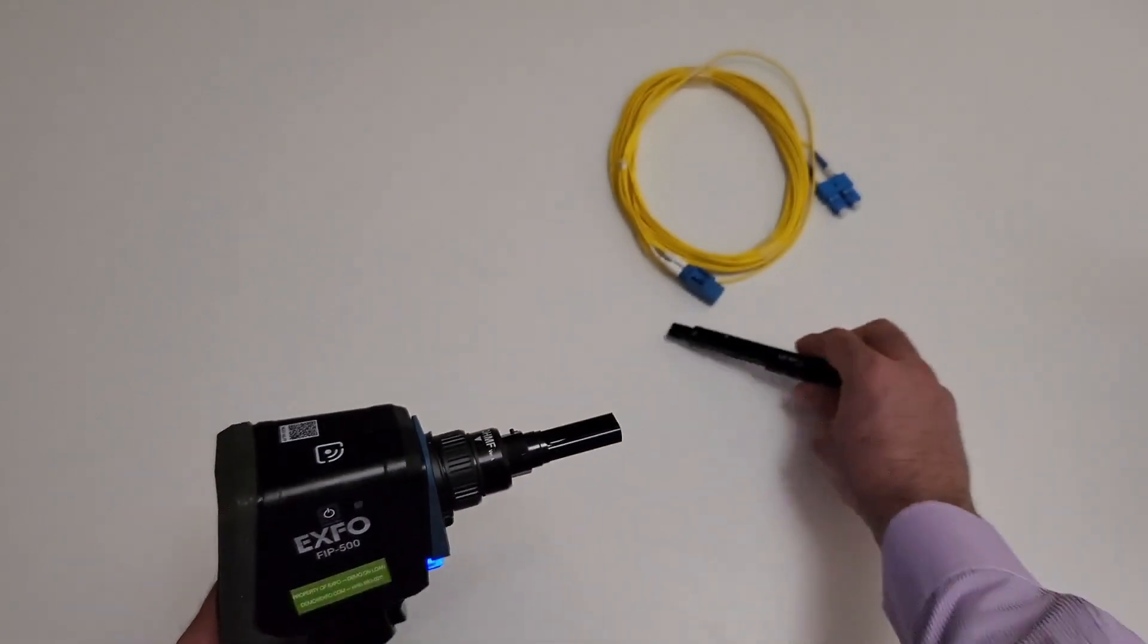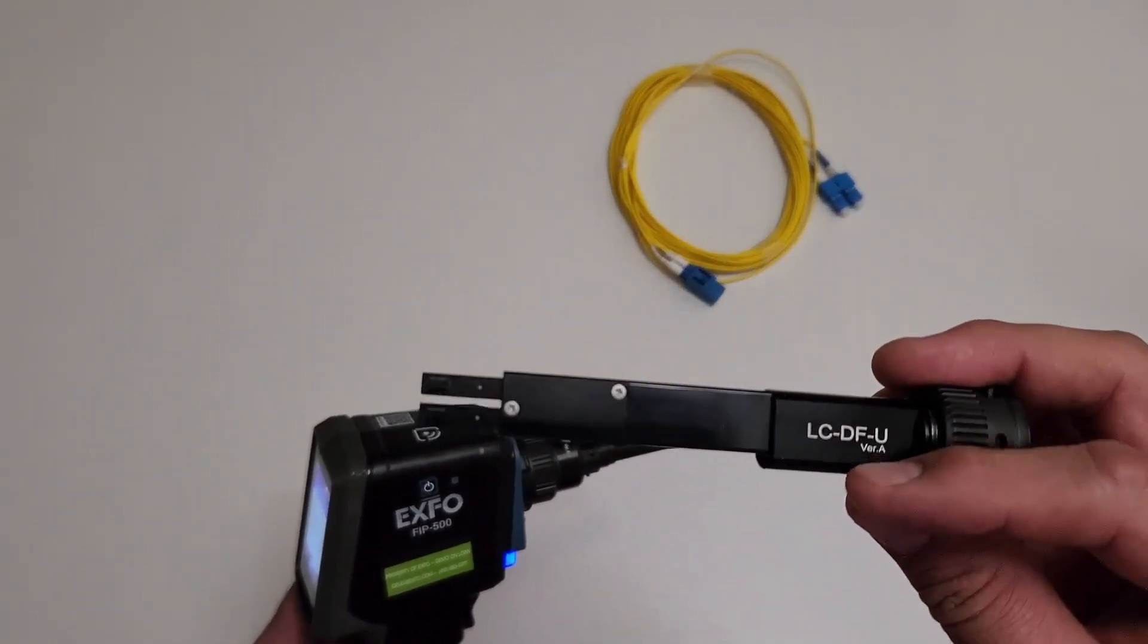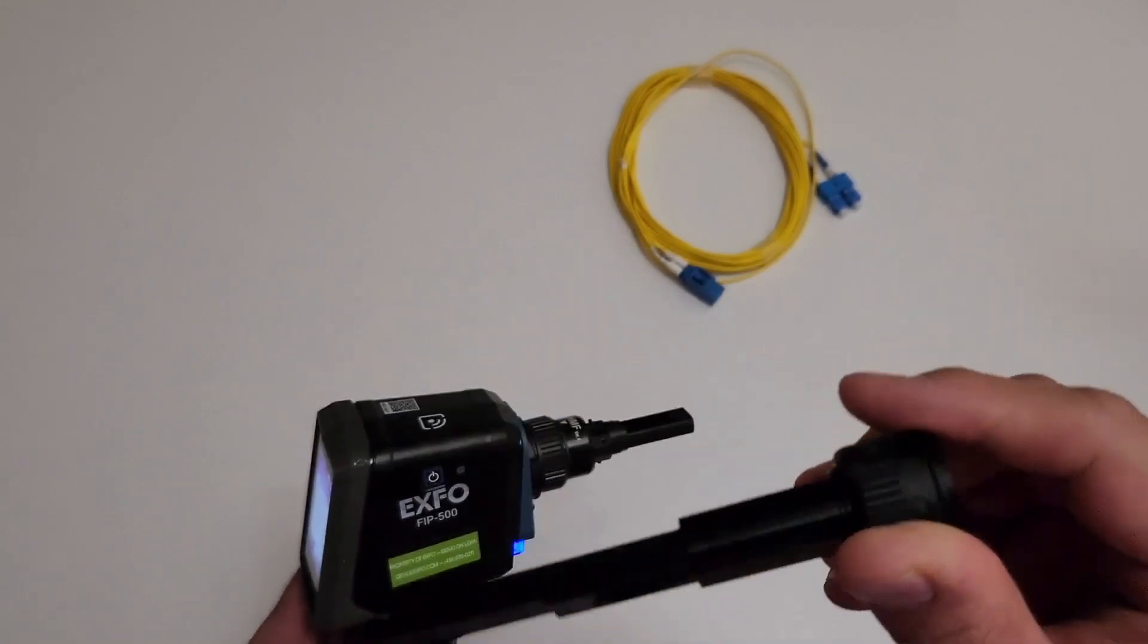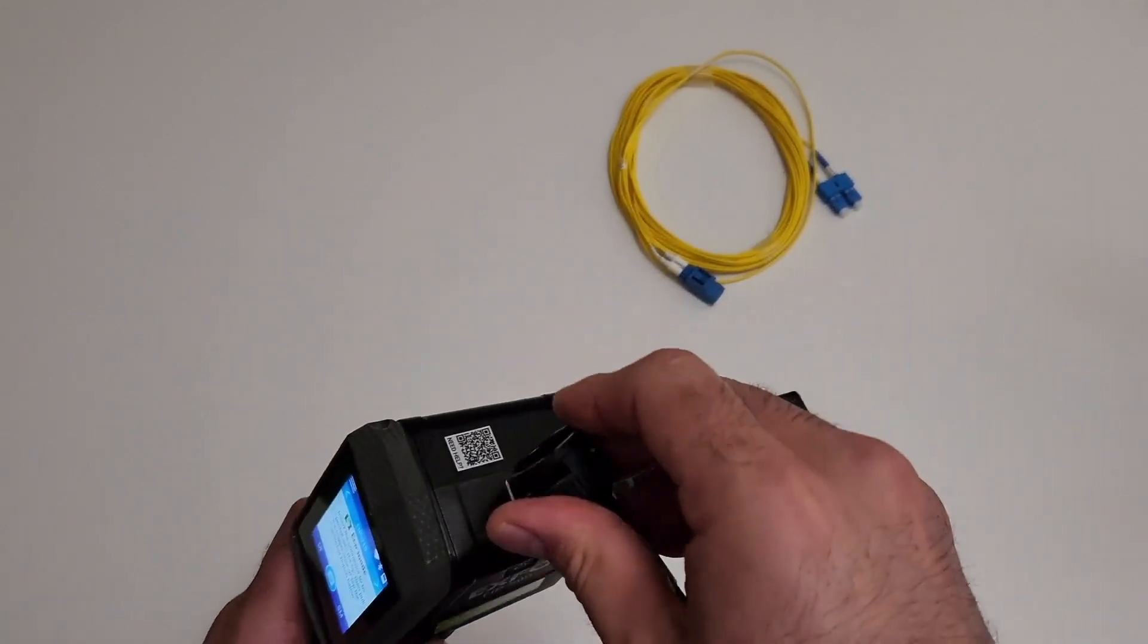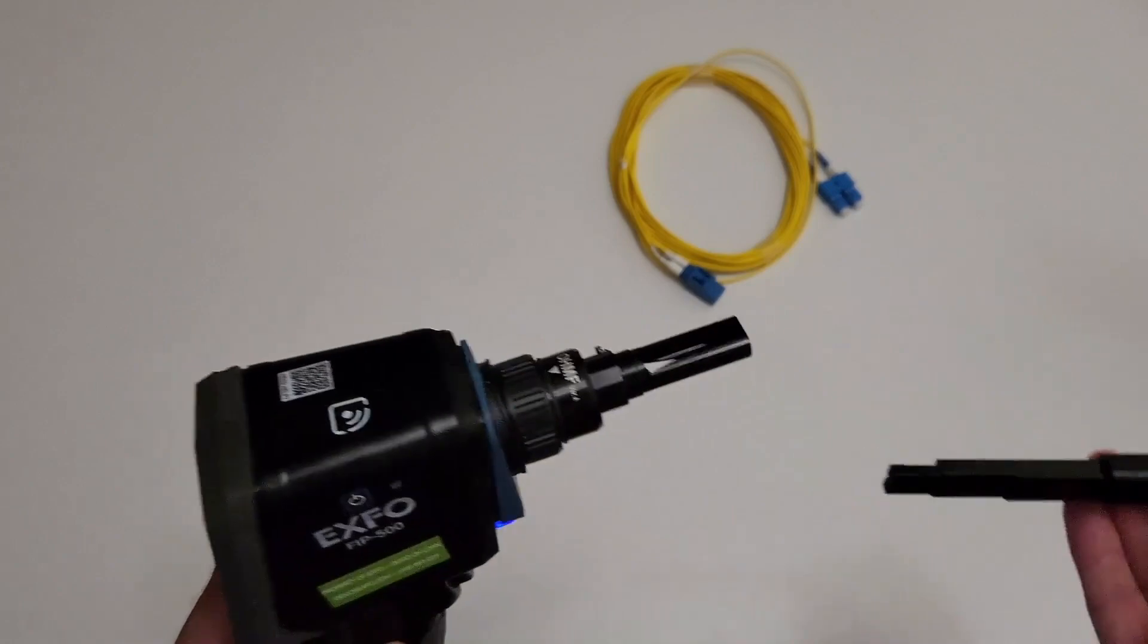We will take this duplex LC smart tip, which bears the RFID logo, and gently hold the smart tip next to the RFID logo on the probe to upload the proper configuration on the FIP-500.